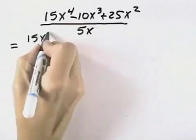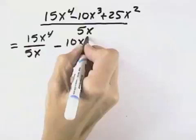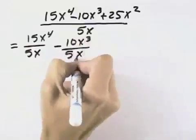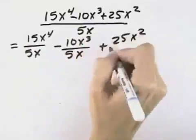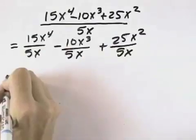That means we can have 15x to the fourth over 5x minus 10x to the third over 5x plus 25x squared over 5x, to split it into three separate fractions.